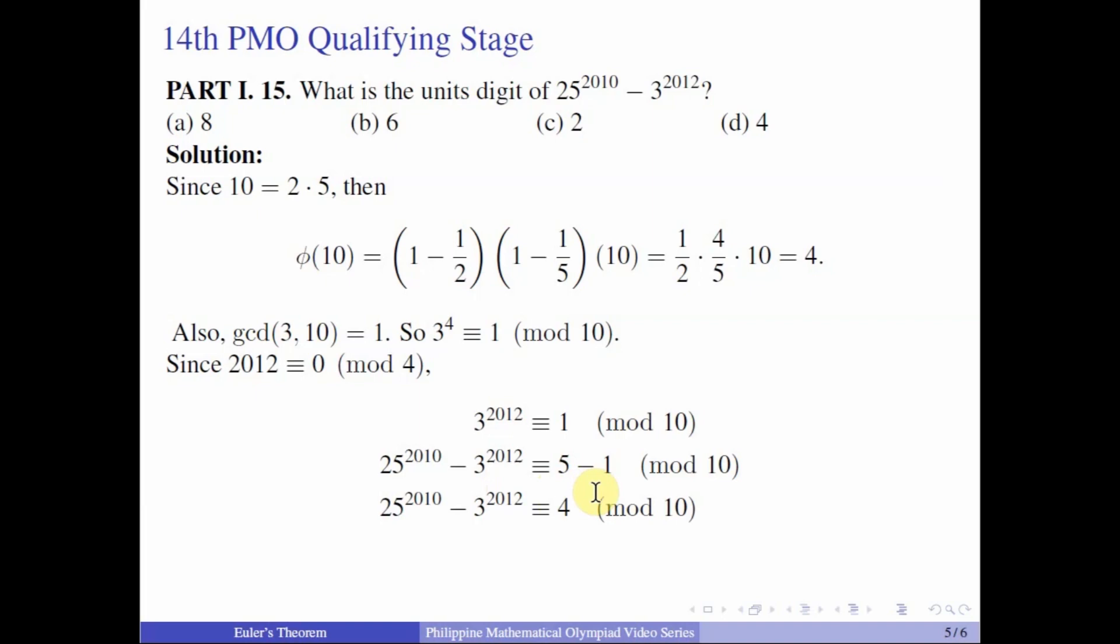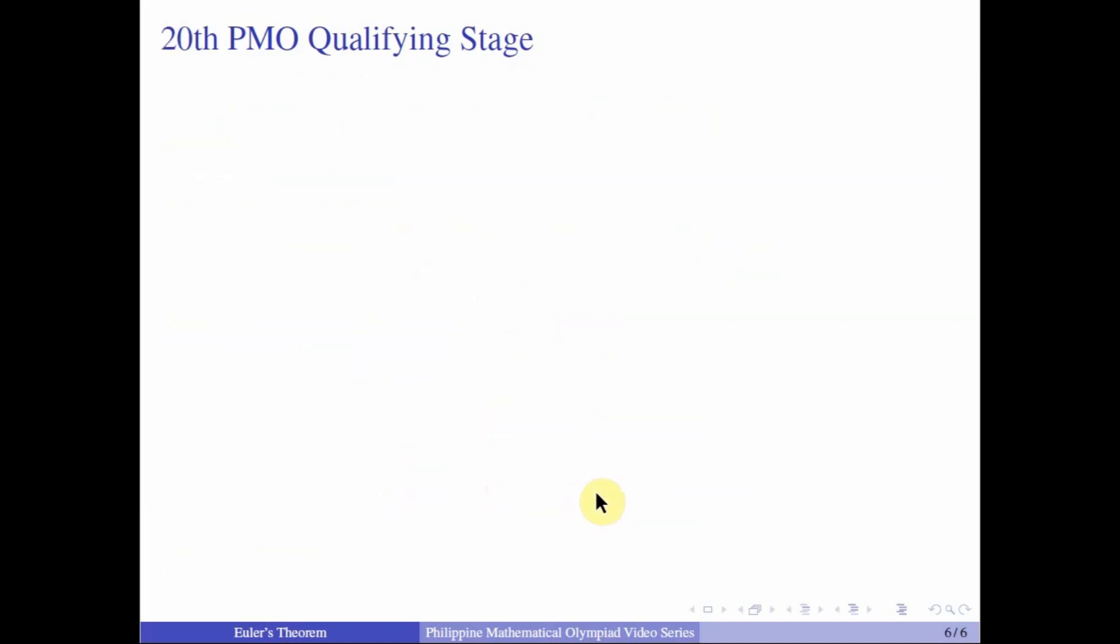And so the units digit of 25 raised to 2010 minus 3 raised to 2012 is D, 4. And then now for our last problem from the 20th PMO qualifying stage, part 2, number 2. What is the sum of the last two digits of 403 raised to the 10 to the 10 plus 6?